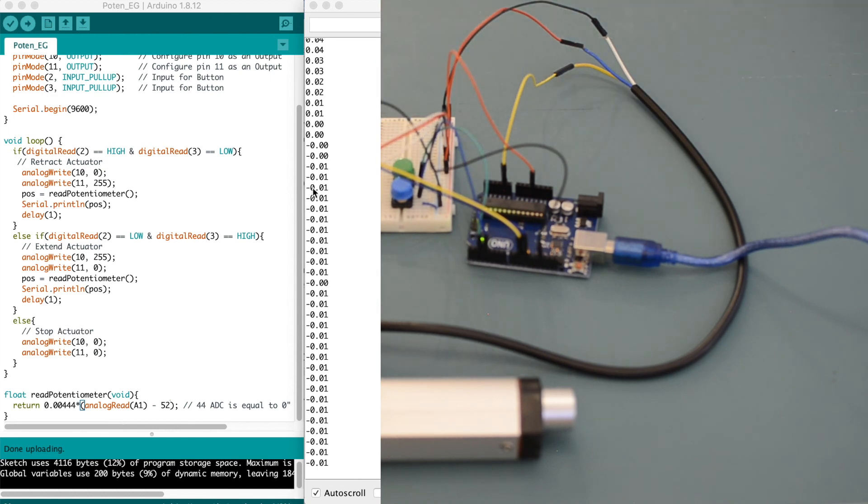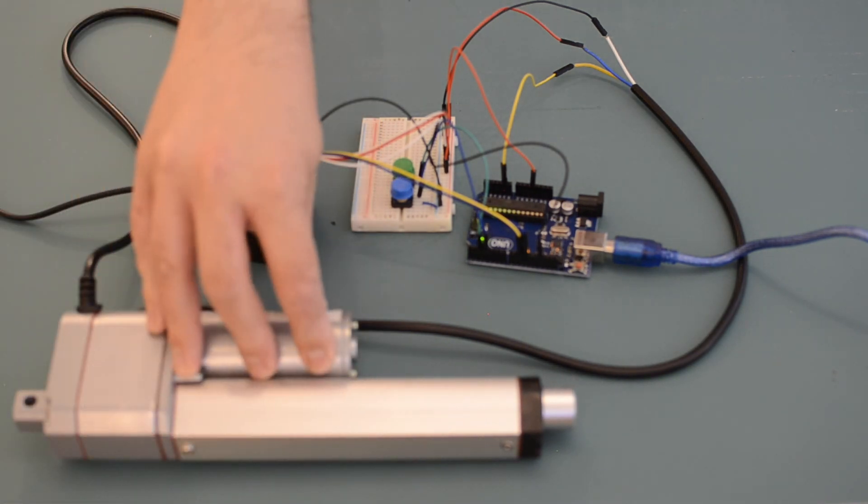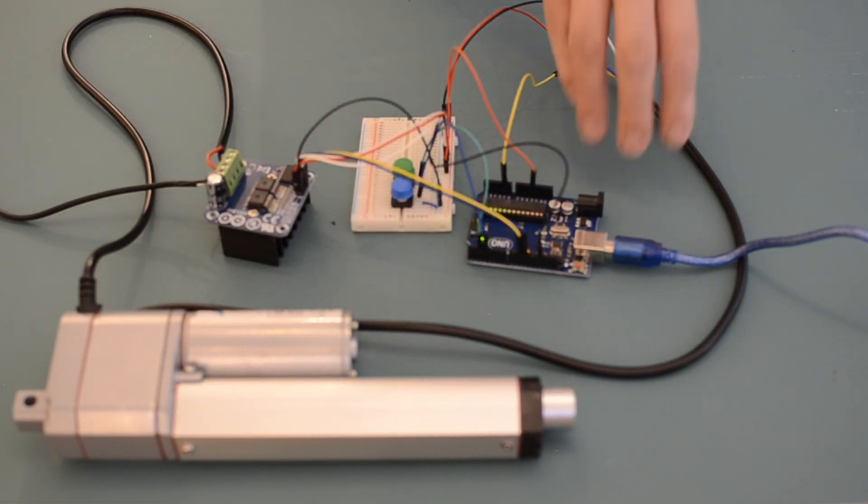You can see there's a bit of a rounding error on my formula, so we're going down to negative 0.1, so I might need to tweak that ratio formula a little bit more. And that's how you use potentiometer feedback from a linear actuator with an Arduino.